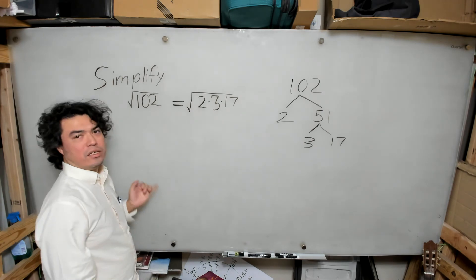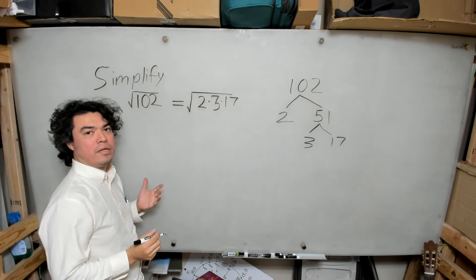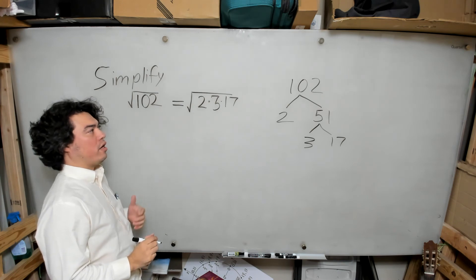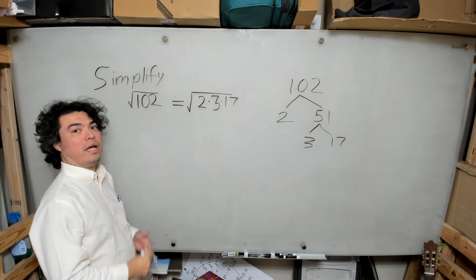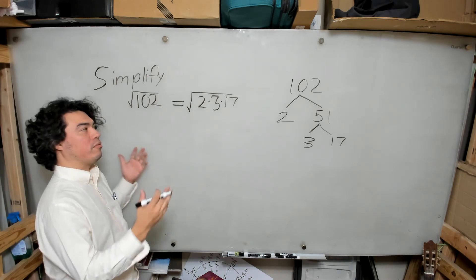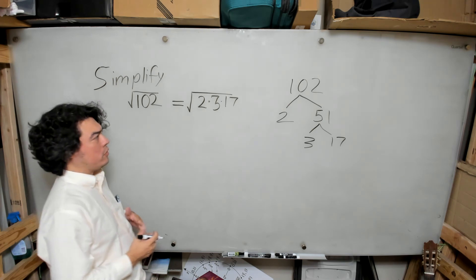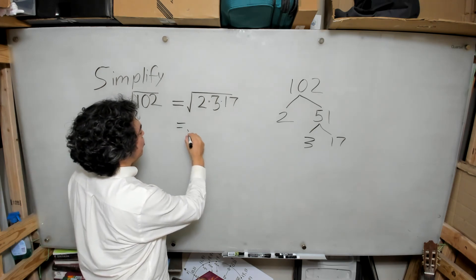Now what becomes clear is that there's no pairs of anything inside, and so the simple way of simplifying this is that it doesn't simplify. There is no simplification to be done, so this would just stay as the square root of 102.